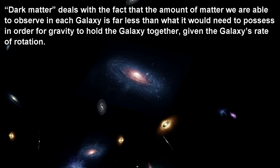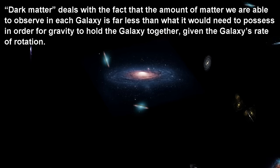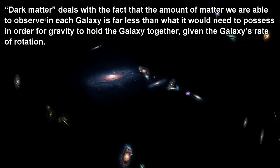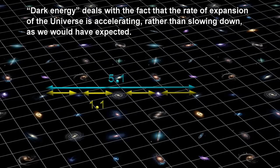Dark matter deals with the fact that the amount of matter we are able to observe in each galaxy is far less than what it would need to possess in order for gravity to hold the galaxy together, given the galaxy's rate of rotation. Dark energy deals with the fact that the rate of expansion of the universe is accelerating, rather than slowing down, as we would have expected.